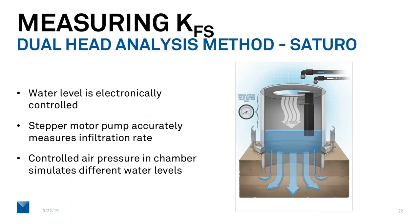So we control the water level electronically. There's a level gauge inside that monitors that. We have a stepper motor that we can accurately measure and control the infiltration rate to maintain that level of water. And then we adjust the air pressure inside the chamber to get the two different heads that we use for infiltration to get the dual head calculation.